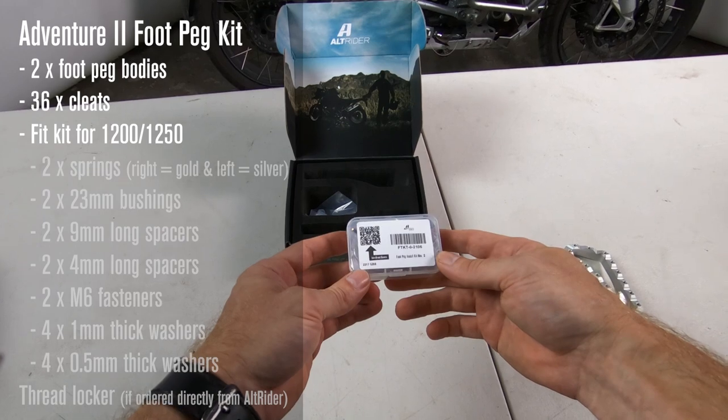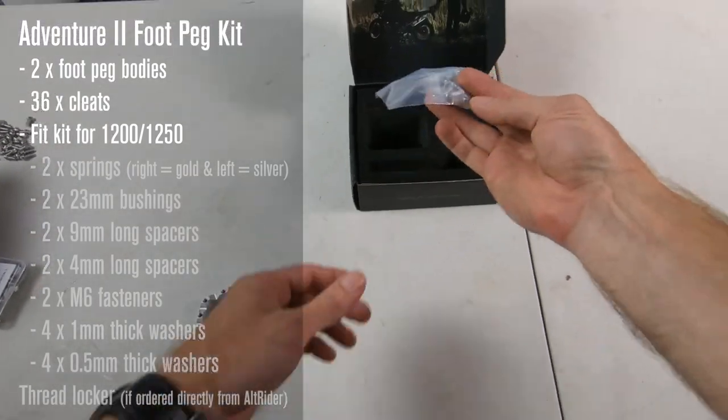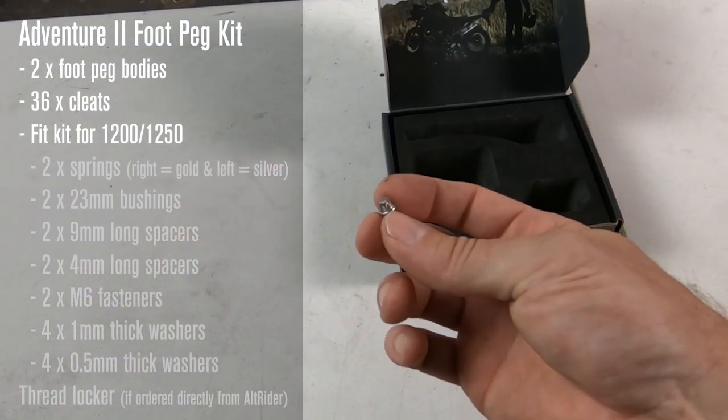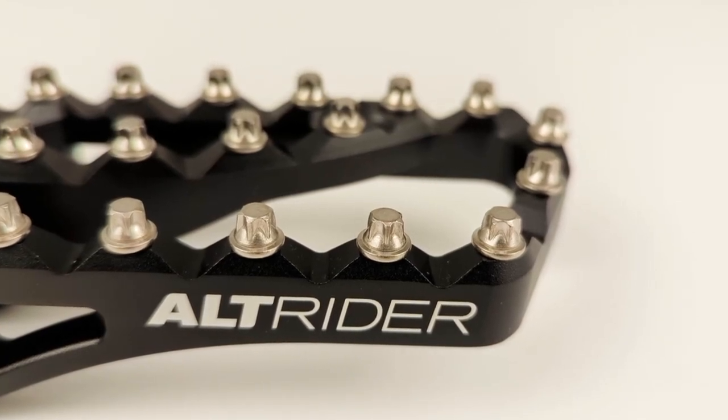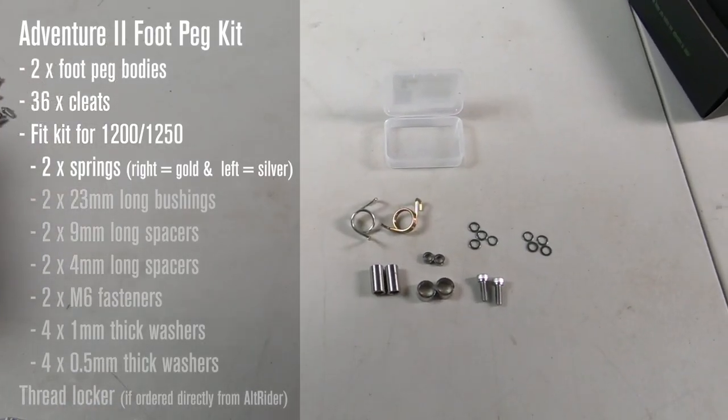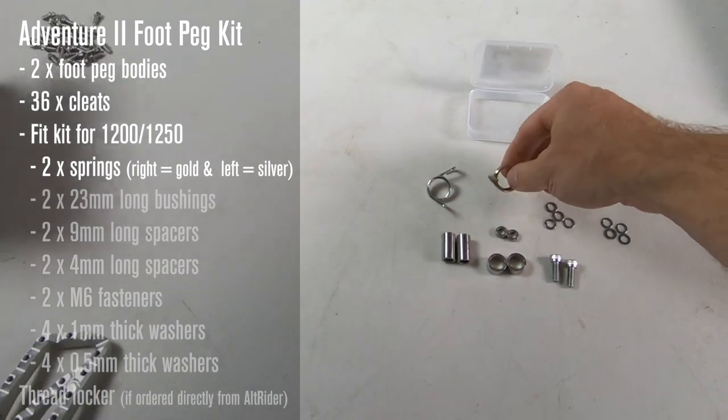These are a direct replacement for the OEM footpegs and come with 36 custom cleat screws. These cleat screws really are a standout product compared to anything else on the market. They provide excellent grip while not chewing up your riding boots, especially compared to pegs that have sharp spikes or even set screws. In your fit kit, you'll receive two springs. The rider's right side is the gold one and the left is the silver.